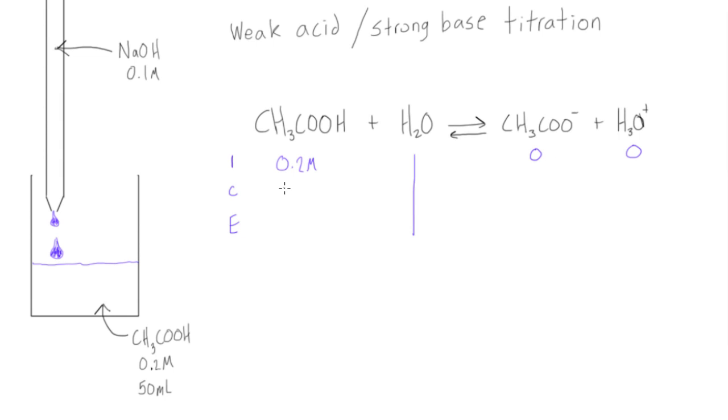Now what we want to do is minus some amount because it's all one-to-one ratios here, and we're going to be adding some amount of products. For our equilibrium concentration, we know this is going to be 0.2 minus x.